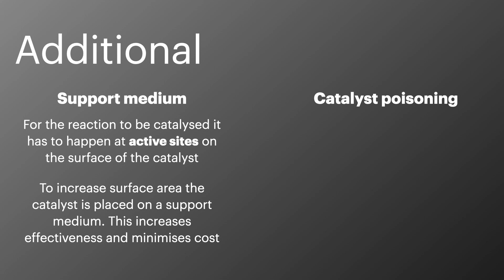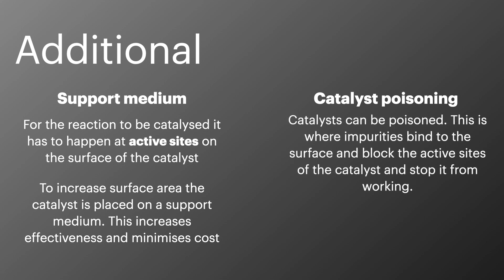It is possible to stop a catalyst from working by poisoning it. This is where impurities bind irreversibly to the active sites of the catalyst. Common examples of this include lead in catalytic converters and sulphur in the harbour process.